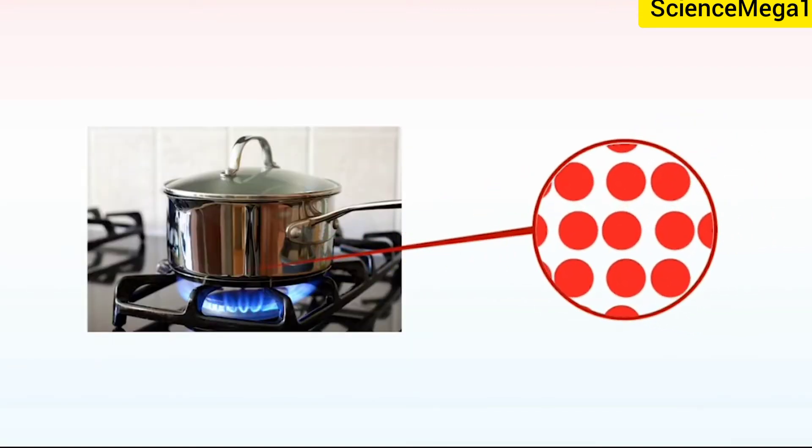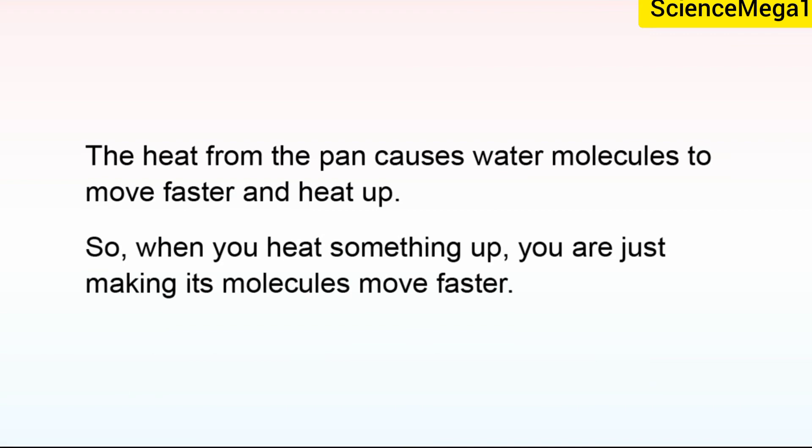For example, when you heat up a pan of water, the heat from the stove causes the molecules in the pan to vibrate faster, causing the pan to heat up. The heat from the pan causes water molecules to move faster and heat up. So when you heat something up, you are just making its molecules move faster.